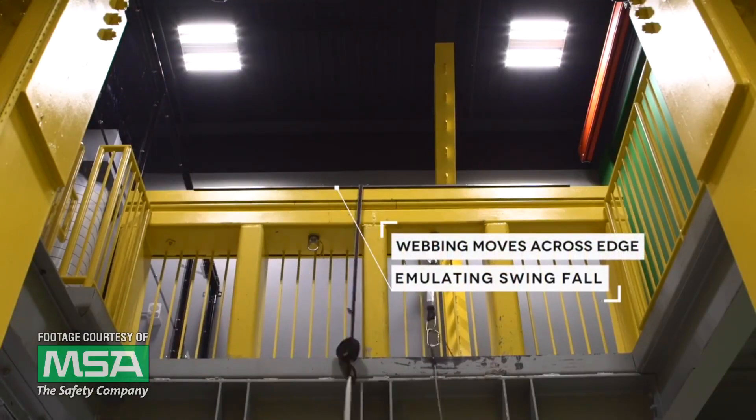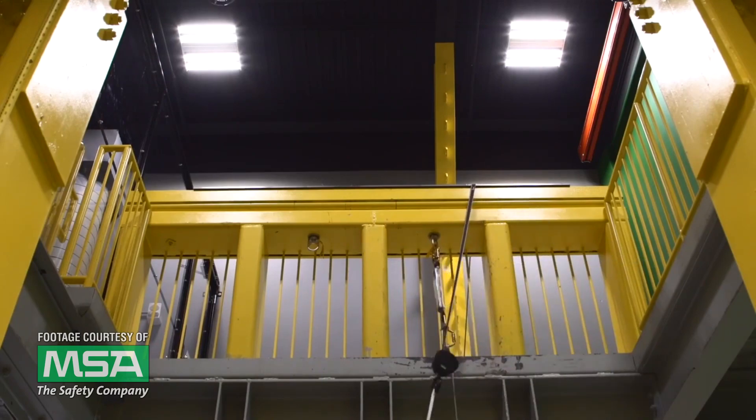On top of increased fall distance, swing fall creates a sawing action when sliding across an edge that can sever almost any standard webbing, rope, or cable.